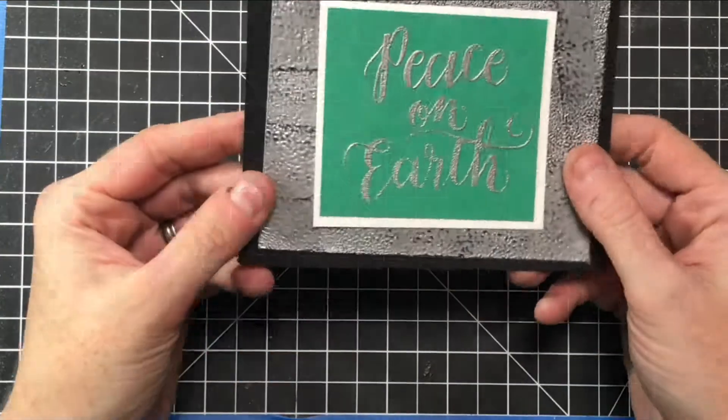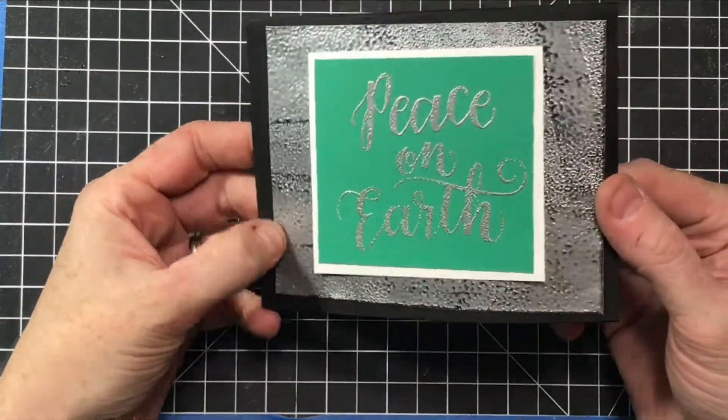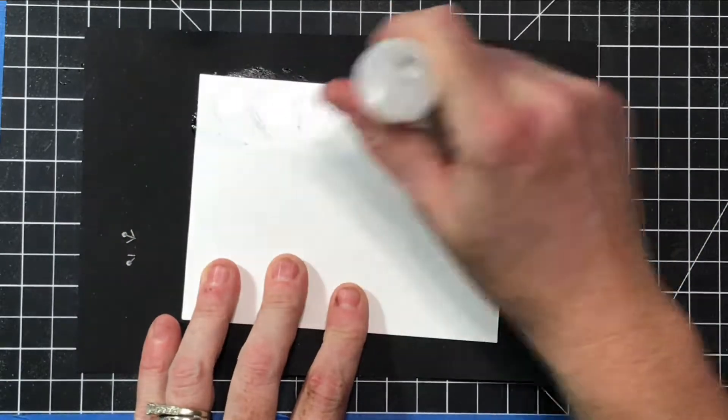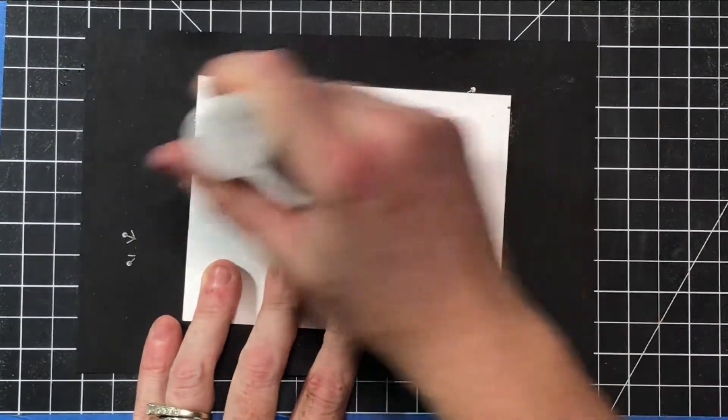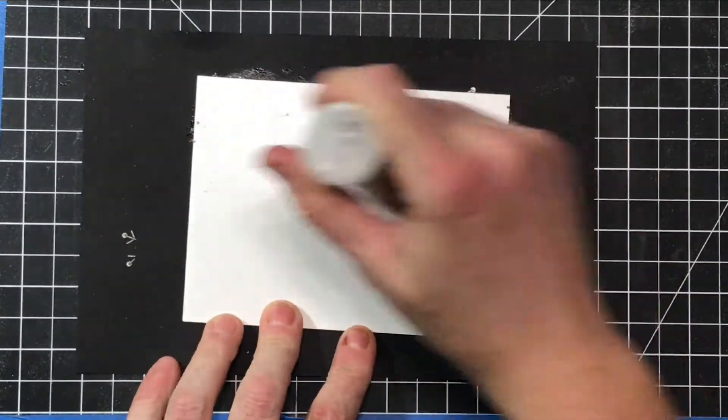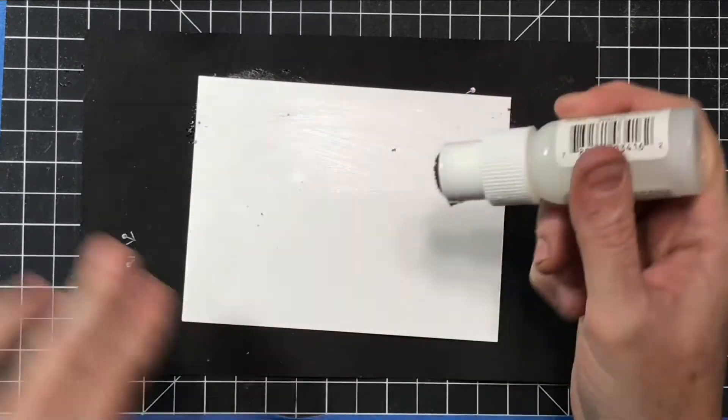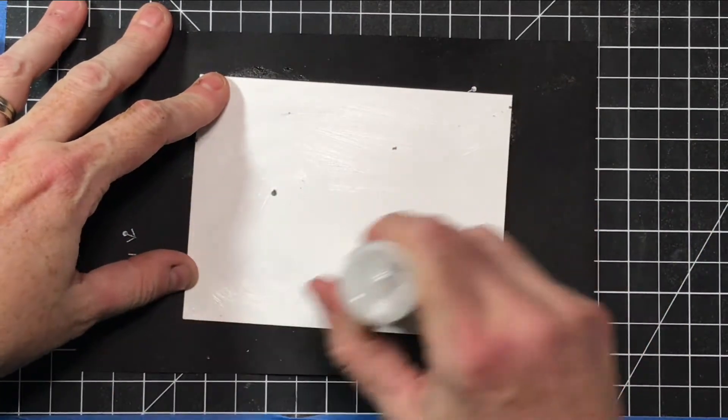So the next technique I'm going to show you is called black ice. You'll notice the background there has some black on it and this one's a lot quicker. You only use one layer of embossing powder with this one and you want to use silver again.